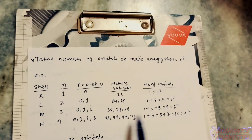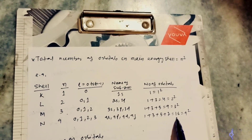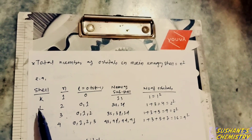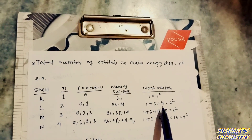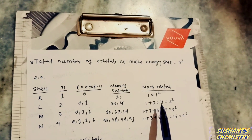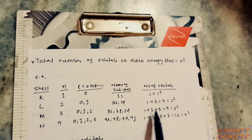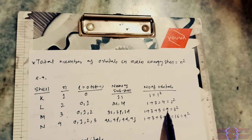That means the N shell contains 16 orbitals, that is four squared equals 16. To summarize: the K shell contains one orbital, the L shell contains four orbitals, the M shell contains nine orbitals, and the N shell contains 16 orbitals.